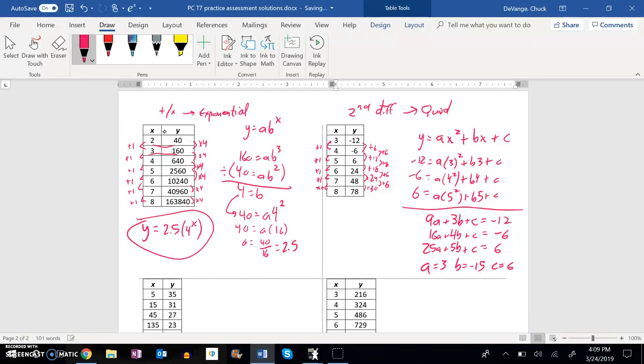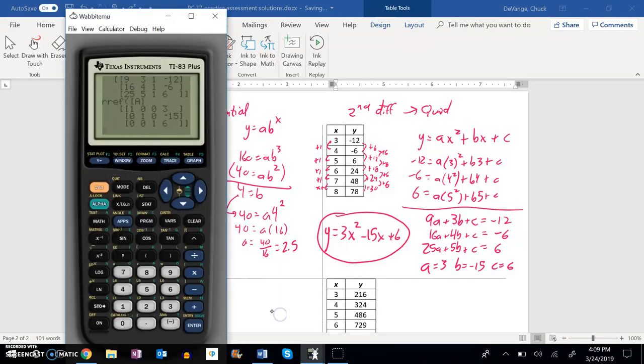So that would be the equation 3x squared minus 15x plus 6. I'm going to plug it back in and check. I want to make sure that actually works. So 3x squared minus 15x plus 6. And let me look at my table. 3 is negative 12, 4 is negative 6, 5, 6. Oh yeah, that matches. Great. There it is.